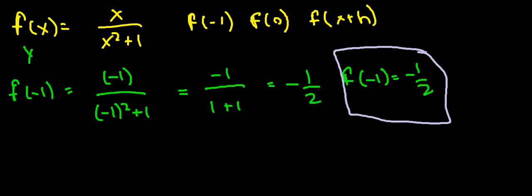Do the second one. f of 0 is equal to 0 over 0 squared plus 1, and we don't really need to go any further because 0 divided by anything is going to be 0. So f of 0 is equal to 0.